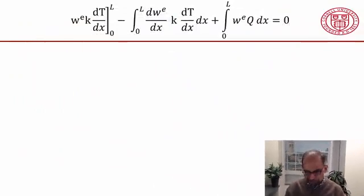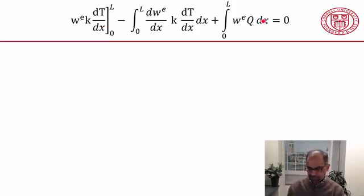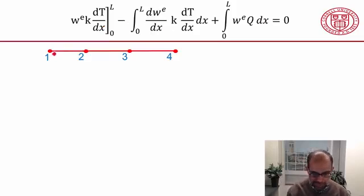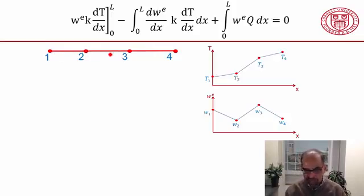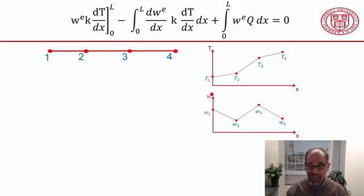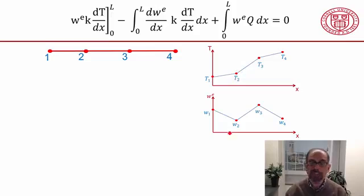So we have our weak form over here, and we have our domain divided into three elements — you can think of each element as a segment of the domain. We have the assumed shapes for the temperature and for the weighting function, and we want to satisfy this equation for these shapes.